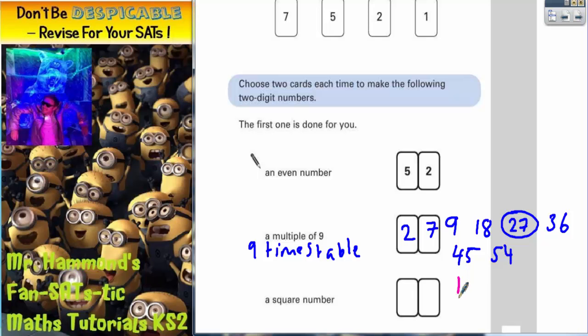1 times 1 is 1, 2 times 2 is 4, 3 times 3 is 9, 4 times 4 is 16, 5 times 5 is 25, 6 times 6 is 36, 7 times 7 is 49 and 8 times 8 is 64.